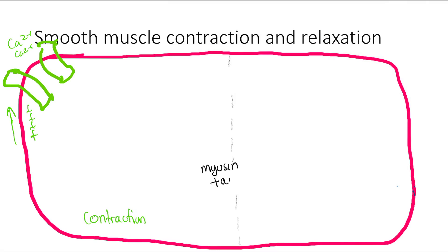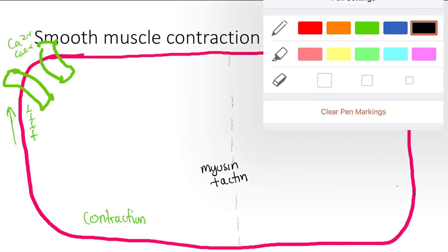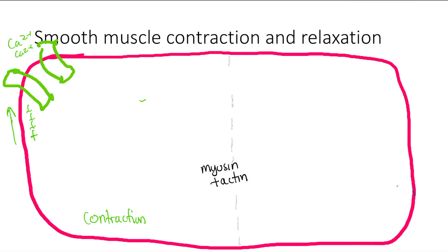We have myosin and actin, same as before. The action potential comes down, the channels get activated, and calcium comes in. The difference here is that we also have the sarcoplasmic reticulum with its calcium. Instead of the dihydropyridine–ryanodine receptor coupling used in skeletal muscle, in smooth muscle calcium comes in and induces calcium release from the SR.